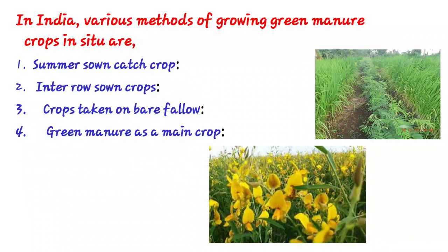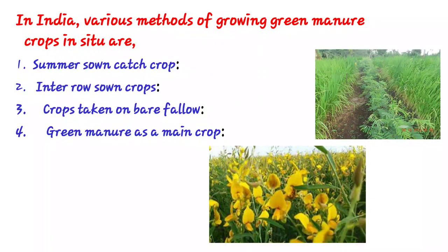In India, various methods of growing green manure crops in situ are used: summer sown catch crop, interro-sown crop, crop taken on bare fallow, and green manure as a main crop. The summer sown catch crop is a very quick-growing method. Sun hemp and dhaincha are used for this method and these crops are grown from May to June.